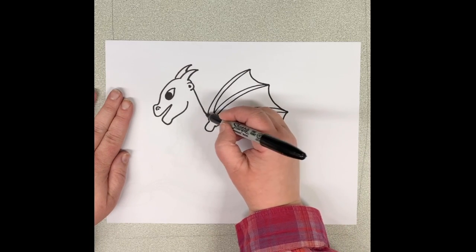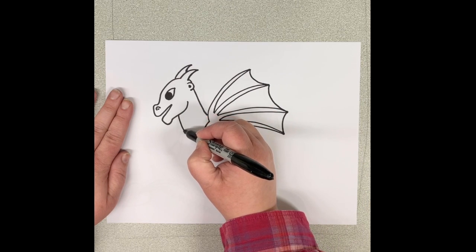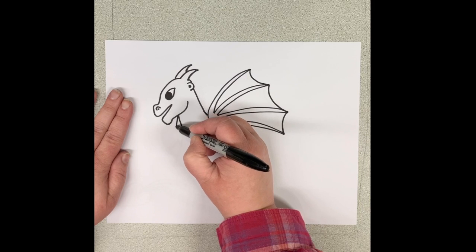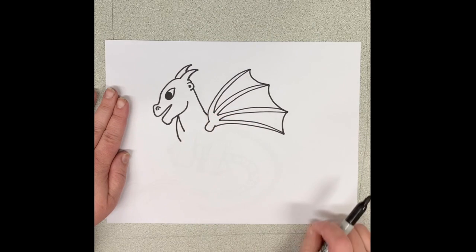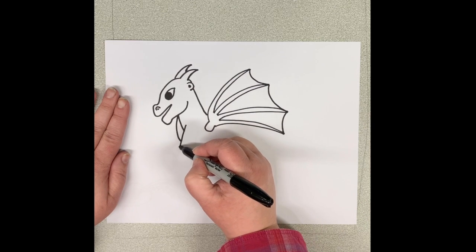Now we're going to draw in the neck. So we're going to draw down. And we actually have two lines that come down. Because we're going to draw part of his belly. And his belly has some scales on it.